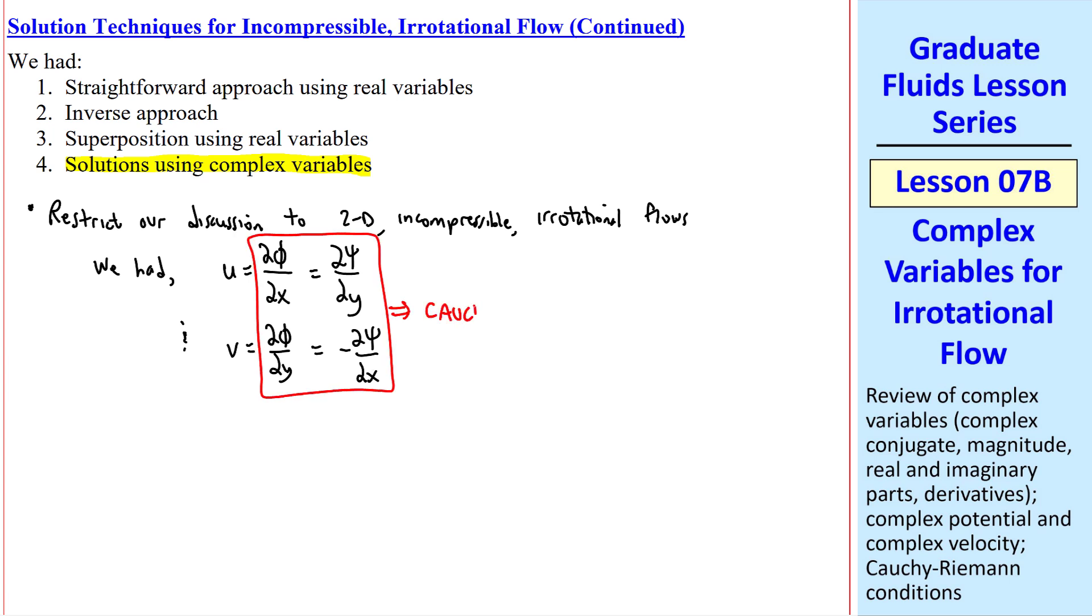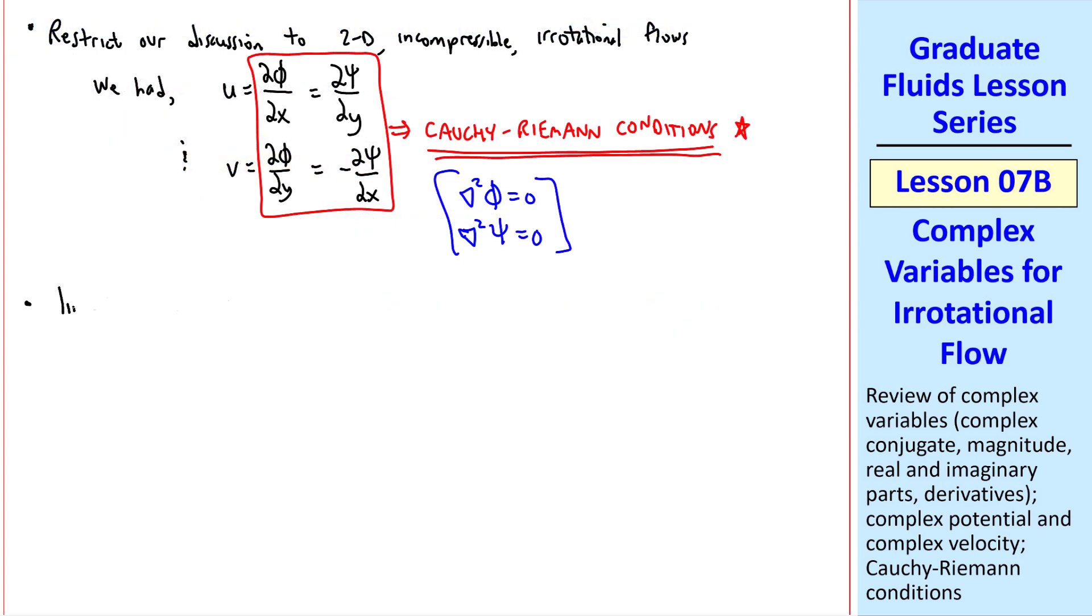This part we call the Cauchy-Riemann conditions, which show that phi and psi are related to each other. For these kinds of flows, we know that the Laplace equation applies for both phi and psi, and derivatives with respect to x and y are related by these Cauchy-Riemann conditions.